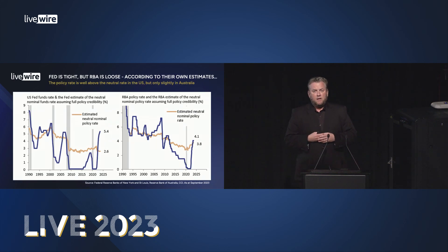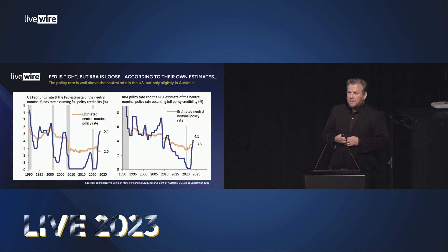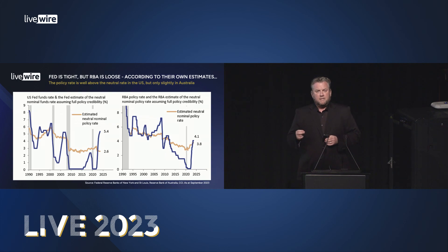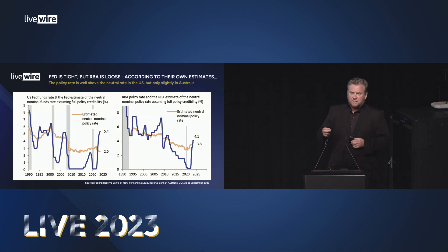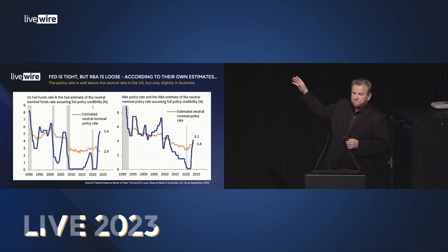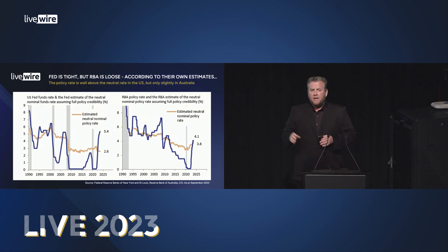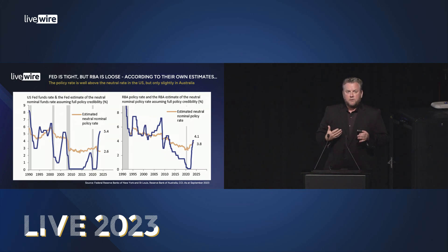Yes, we have had big increases in interest rates and we're seeing cracks starting to appear, but please note: the RBA is not forecasting it will return to its 2.5% inflation target until 2026, literally years away. One reason may be that their cash rate is at 4.1%, but they say the normal cash rate is 3.8%. They do not have policy in restrictive territory according to their own modeling.